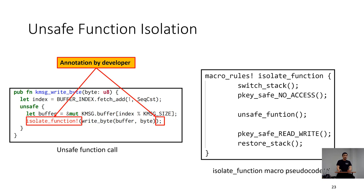For the unsafe function call, we need to switch the stack. We wrap the function call with a Rust macro called isolate_function. The macro first switches the stack and changes the protection key permission, then calls the isolated function, switches back the permission, and restores the stack.